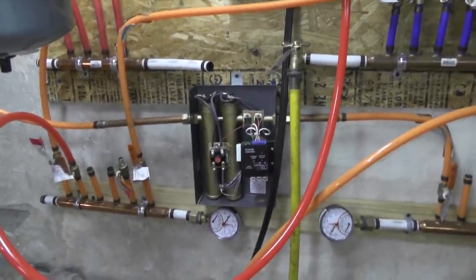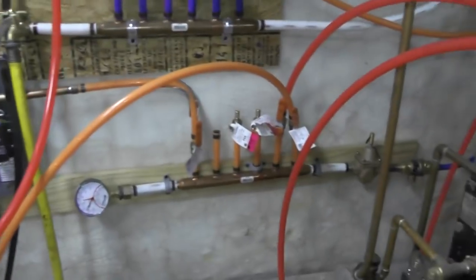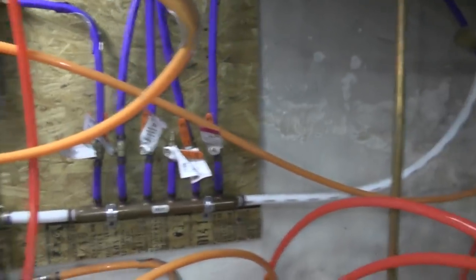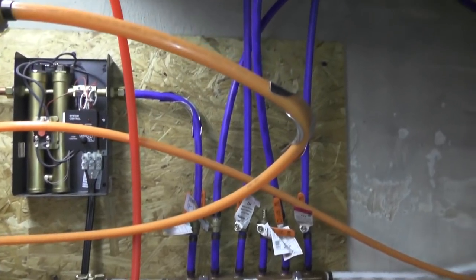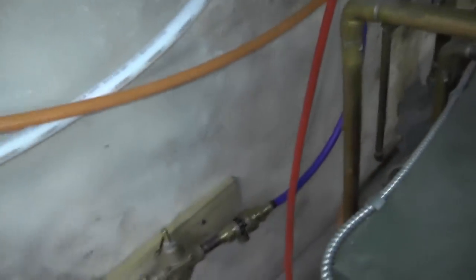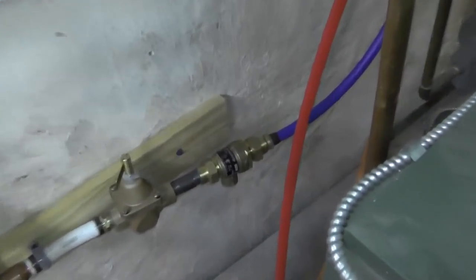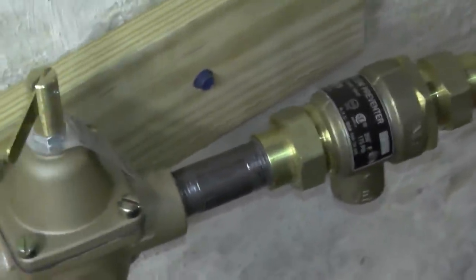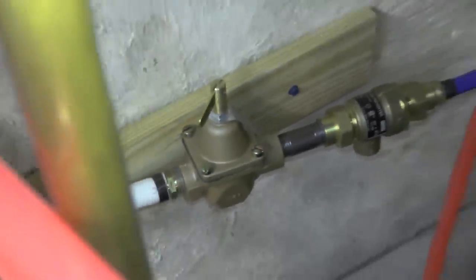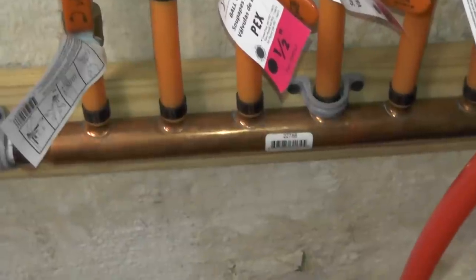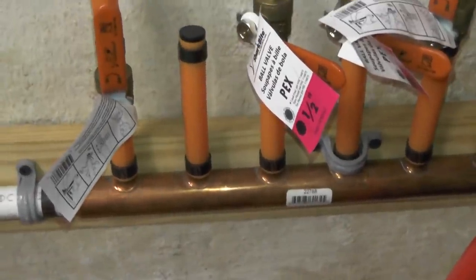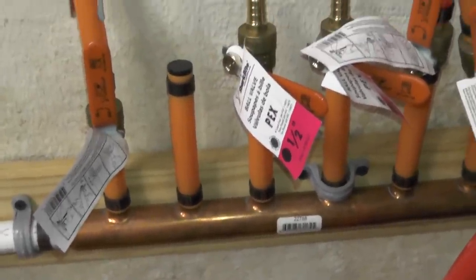So from my cold potable water I just took one line and looped it up and around and that's coming into first backflow preventer and then that's piped over to a fill valve, 15 psi fill valve.